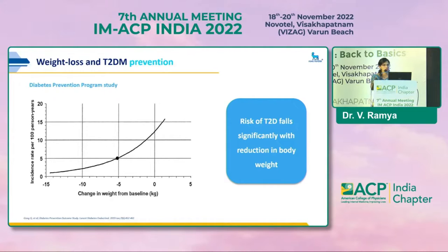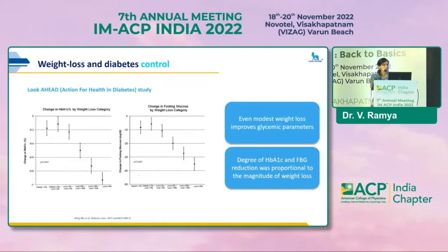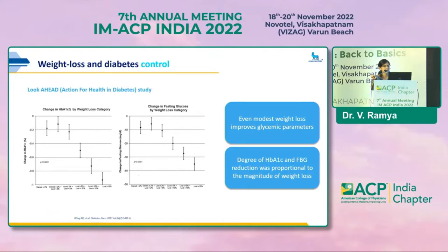The Look-AHEAD trial was done to see whether intensive lifestyle intervention prevents the onset of cardiovascular outcomes. This study clearly showed that with weight loss ranging from more than 2% to 15%, there is a direct relation: the more the weight loss, the greater the decrease in HbA1c shown on the y-axis. The same is true for fasting plasma glucose versus weight loss on the x-axis. So even with modest weight loss, there is a significant improvement in glycemic parameters.